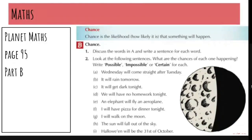It says, look at the following sentences. What are the chances of each one happening? Write possible, impossible, or certain for each. So possible, impossible, and certain are three words that we can use to describe the likelihood or describe the chance of something happening.